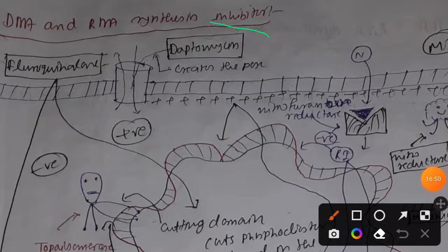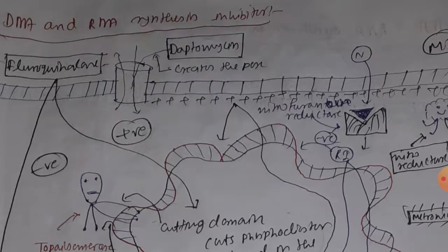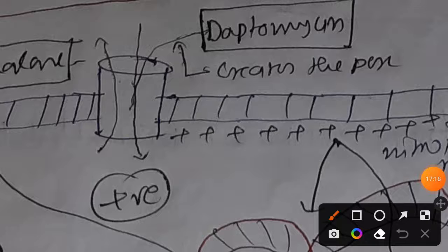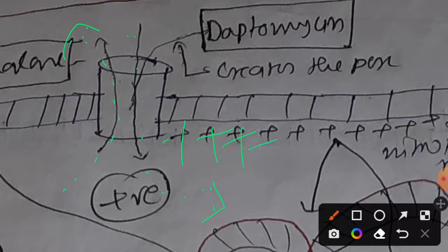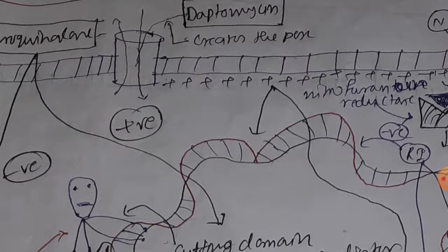Drug number four is daptomycin, a newer antibiotic with quite interesting activity. It creates pores in both the cell membrane and, if a cell wall is present, in the cell wall as well. By creating pores, it facilitates quick and subsequent depolarization, because the pore causes leakage of ions both from inside to outside and outside to inside. This causes the inner charge of the membrane to become predominantly positive.